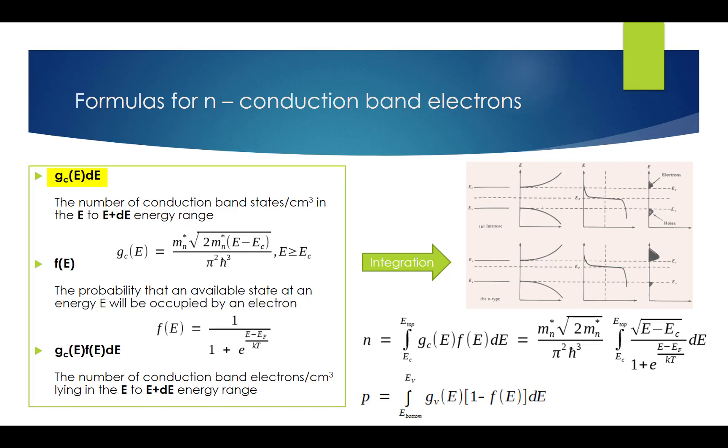Since G_C(E)dE represents the number of conduction band states per cubic centimeter in the E to E plus dE energy range, and f(E) represents the probability that an available state at energy E will be occupied by an electron, it follows that G_C(E)f(E)dE gives the number of conduction band electrons per cubic centimeter lying in the E to E plus dE energy range.